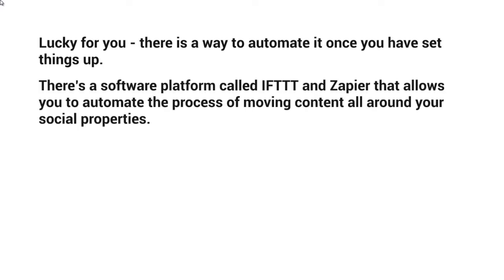There's a software platform called IFTTT and there's another one called Zapier.com that allows you to automate the process of moving content all around your social properties. So you could take a YouTube video and have it embedded on your WordPress site, and then have it shared on your Facebook fan page, your Twitter page, your Instagram, and all of that. You have essentially what we call triggers — whenever the trigger happens, something else happens.